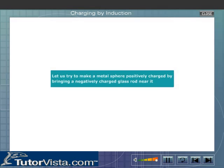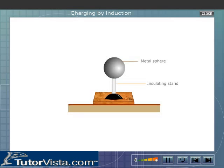Let us try to make a metal sphere positively charged by bringing a negatively charged glass rod near it. The metal sphere which is supported on an insulating stand is initially neutral.